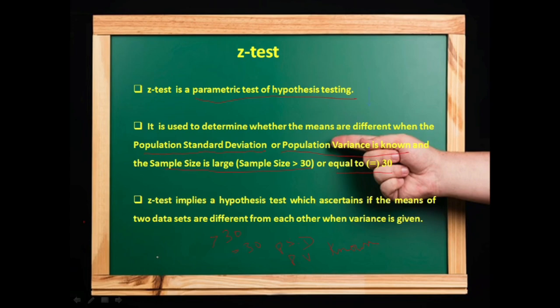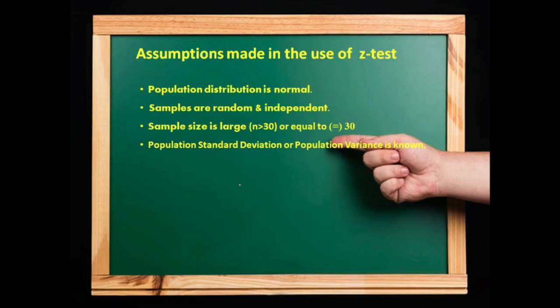Assumptions made in the use of Z-test: when population distribution is normal, samples are random and independent, sample size is large or equal to 30, population standard deviation or population variance is known.